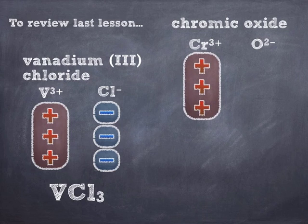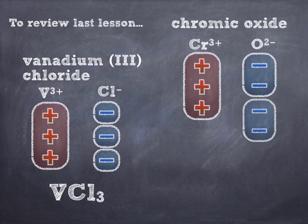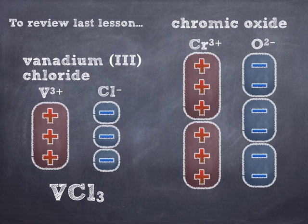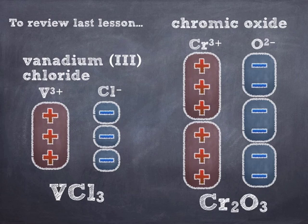Let's put down a plus 3 chromium, a negative 2 oxide, and another negative 2 oxide. Now I don't have enough positive charge, so let's add another chromium. Now I've got too much, and you keep going until it all works out. Criss-cross would have taken care of this — you'd end up with a 3 after the O and a 2 after the chromium. It's really up to you whichever way you do it, as long as you understand what's going on behind the scenes.